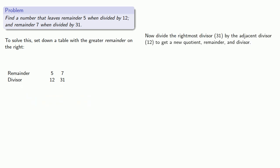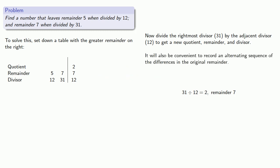Now we're going to divide the rightmost divisor, 31, by the adjacent divisor, 12. That'll give us a new quotient, a new remainder, and a new divisor, which we'll want to record. So we'll add a line for recording the quotient. We see that 31 divided by 12 is 2 with remainder 7. We'll record those: our divisor was 12, quotient 2, remainder 7. It will also be convenient to record an alternating sequence of the differences in the original remainders. The difference between the original remainders, 5 and 7, gives us 2. So we'll start off our sum-difference column with a plus 2.